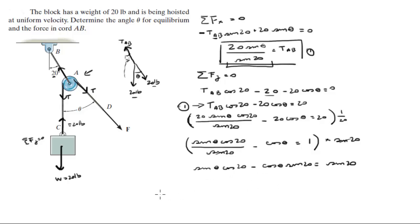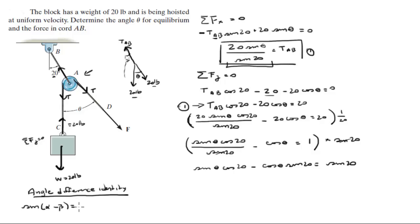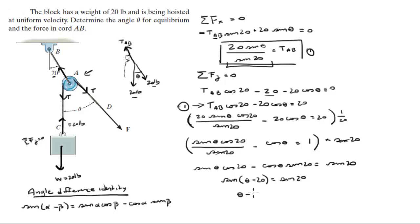Recognizing the angle difference identity from trigonometry — sine(A − B) = sine A cosine B minus cosine A sine B — the left side is exactly sine(theta − 20). So sine(theta − 20) = sine of 20, which gives theta − 20 = 20, therefore theta equals 40 degrees.